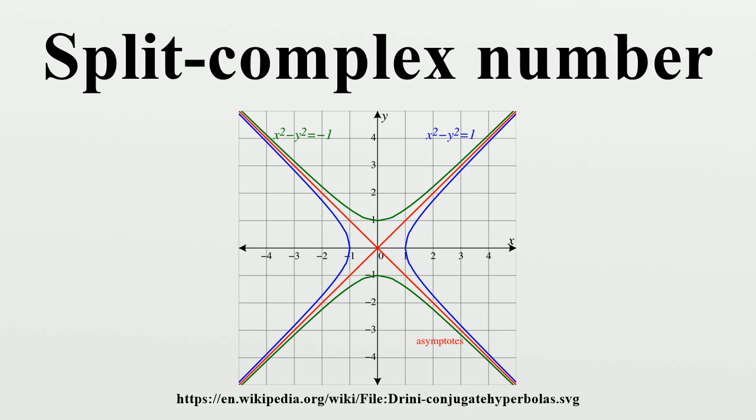For all real values of the hyperbolic angle θ, the split complex number λ equals e^(jθ) has norm 1 and lies on the right branch of the unit hyperbola. Numbers such as λ have been called hyperbolic versors since λ has modulus 1. Multiplying any split complex number z by λ preserves the modulus of z and represents a hyperbolic rotation.